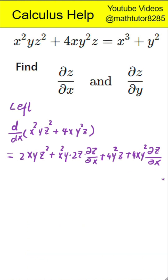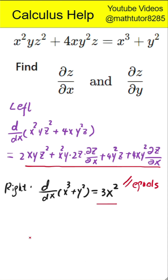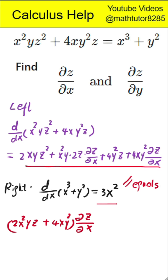The derivative of the right-hand side, x cubed plus y squared with respect to x, is simply three times x squared. Now, group together all terms that involve the partial derivative of z with respect to x on the left-hand side and move everything else to the right-hand side. So we have: open parenthesis two times x squared times y times z plus four times x times y squared close parenthesis times the partial derivative of z with respect to x equals three times x squared minus two times x times y times z squared minus four times y squared times z.